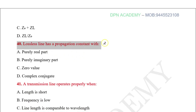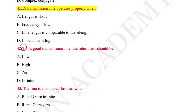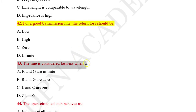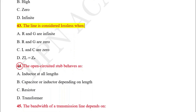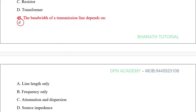Question number forty: The lossless line has a propagation constant with? Question number forty-one: A transmission line operates properly when? Question number forty-two: For a good transmission line, the return loss should be? Question number forty-three: The line is considered lossless when? Question number forty-four: The open-circuited stub behaves as? Question number forty-five: The bandwidth of a transmission line depends on?